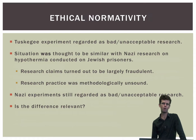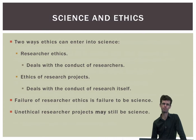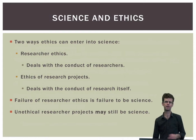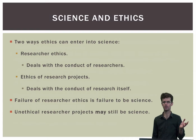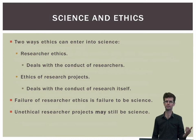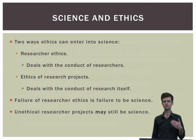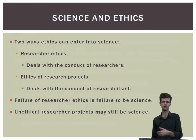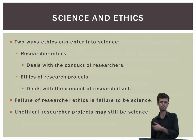The question is: what difference do these differences make? Ethics can enter into scientific research in two ways: one, regarding researcher ethics, and two, regarding the ethics of the research project. From the point of view of what science is, failure of researcher ethics takes priority. If purported scientific research fails in this regard, then it fails to be science at all. On the other hand, failure with regard to the ethics of research projects does not, in and of itself, undermine the claim that the research is still scientific.